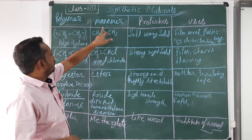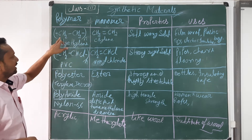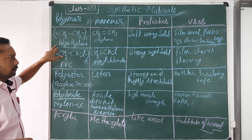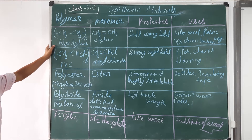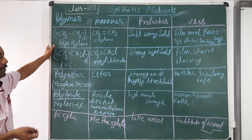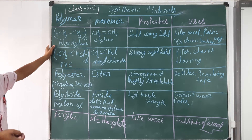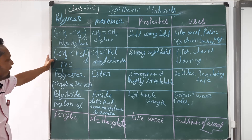Ethene is the monomer and polyethylene is its polymer, which is a soft and waxy solid used in film wrap, plastic bags, toys, electric insulators, and more.